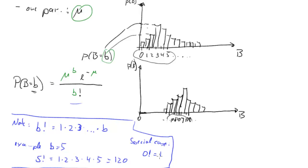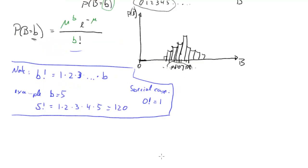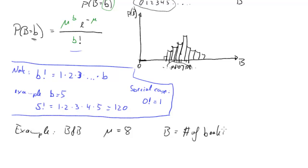With this we can go to our example, using the lecture example. The example is that we are looking at a bed and breakfast place and how many booking requests they get per day. Let's say they know that mu is 8, and B equals the number of booking requests per day. A feature of the Poisson distribution is that it typically counts the number of some sort of events during a time interval — here, a day. What we want to know is the probability that they get exactly three booking requests on that day.